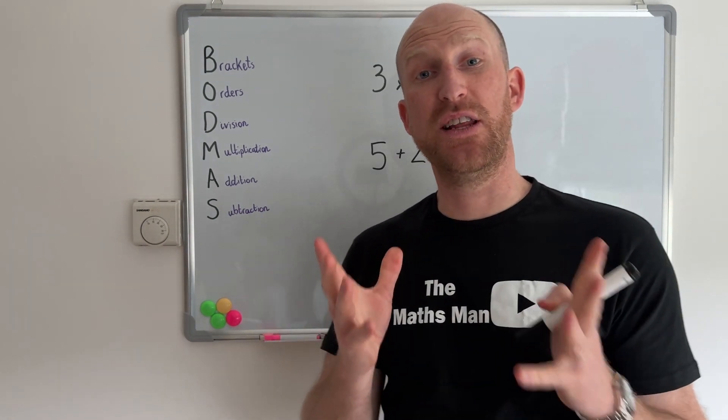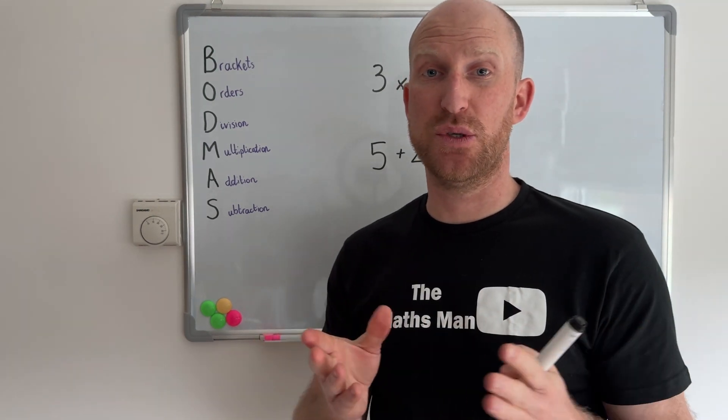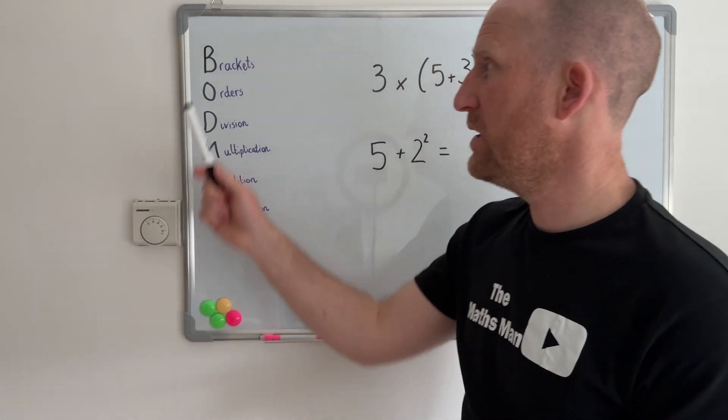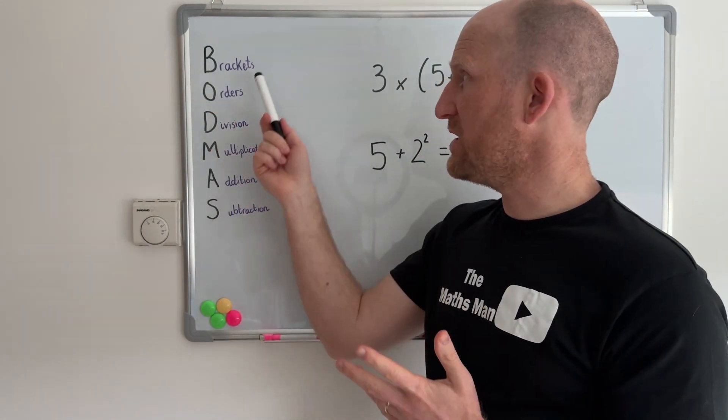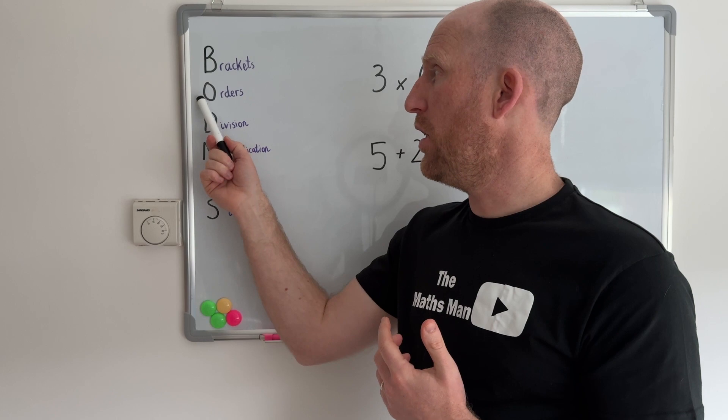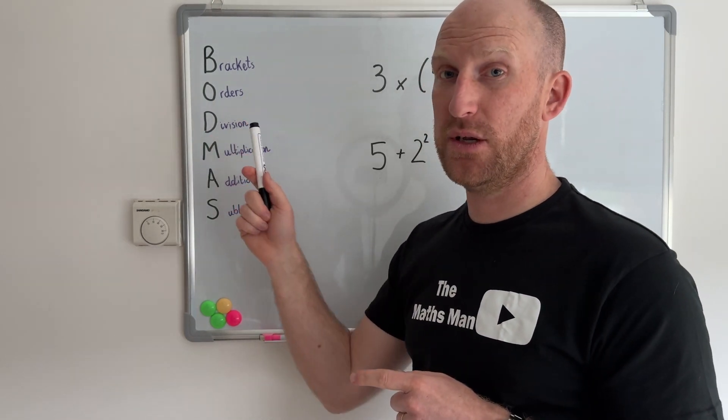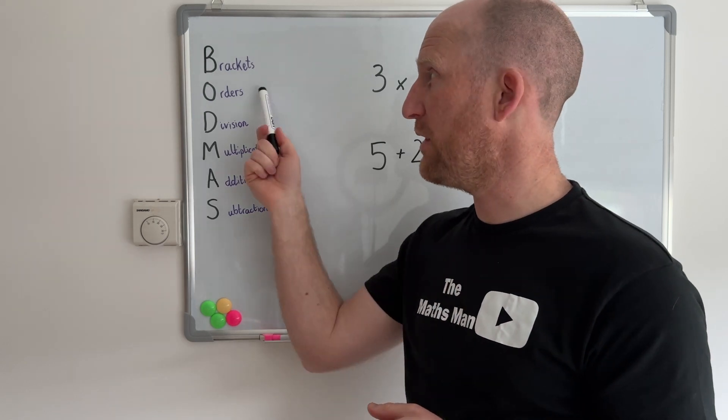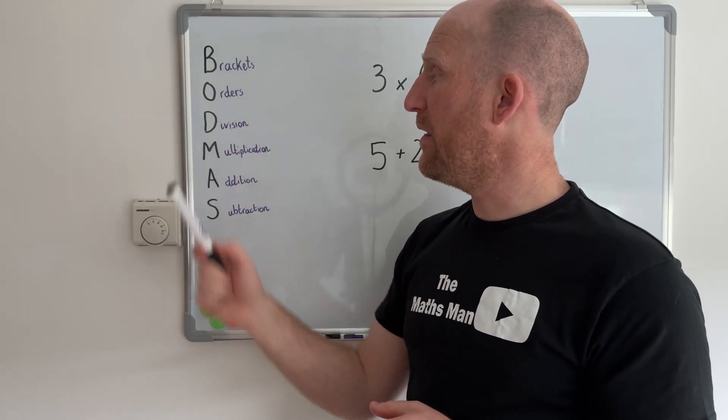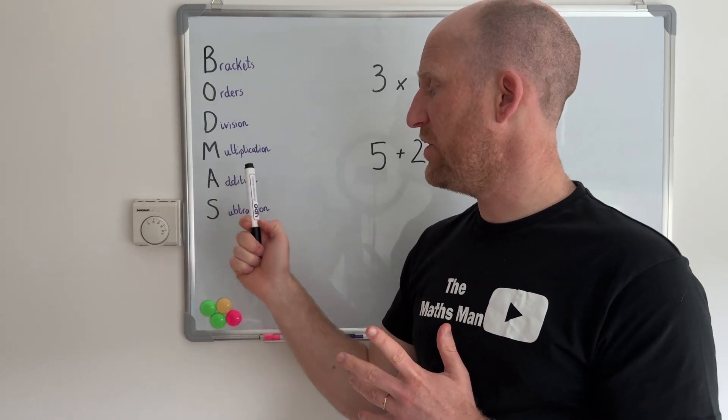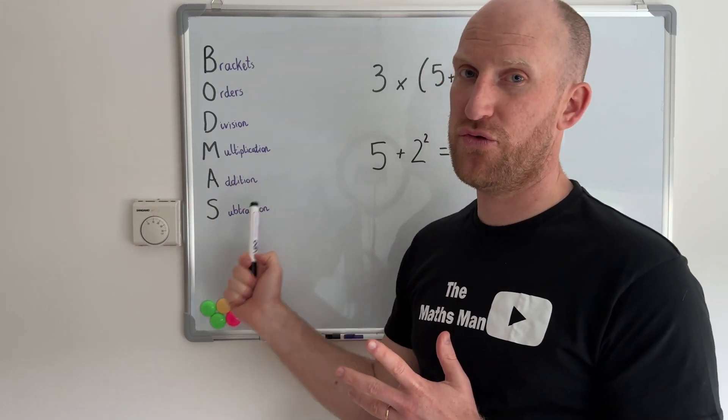So the last thing you really need to know before we move into the examples is what the mnemonic of BODMAS means. So B stands for brackets, O stands for orders (that's always the one that people get confused with so just make sure you stick around for that part), and then we've got D for division, then M for multiplication, A for addition, and S for subtraction.